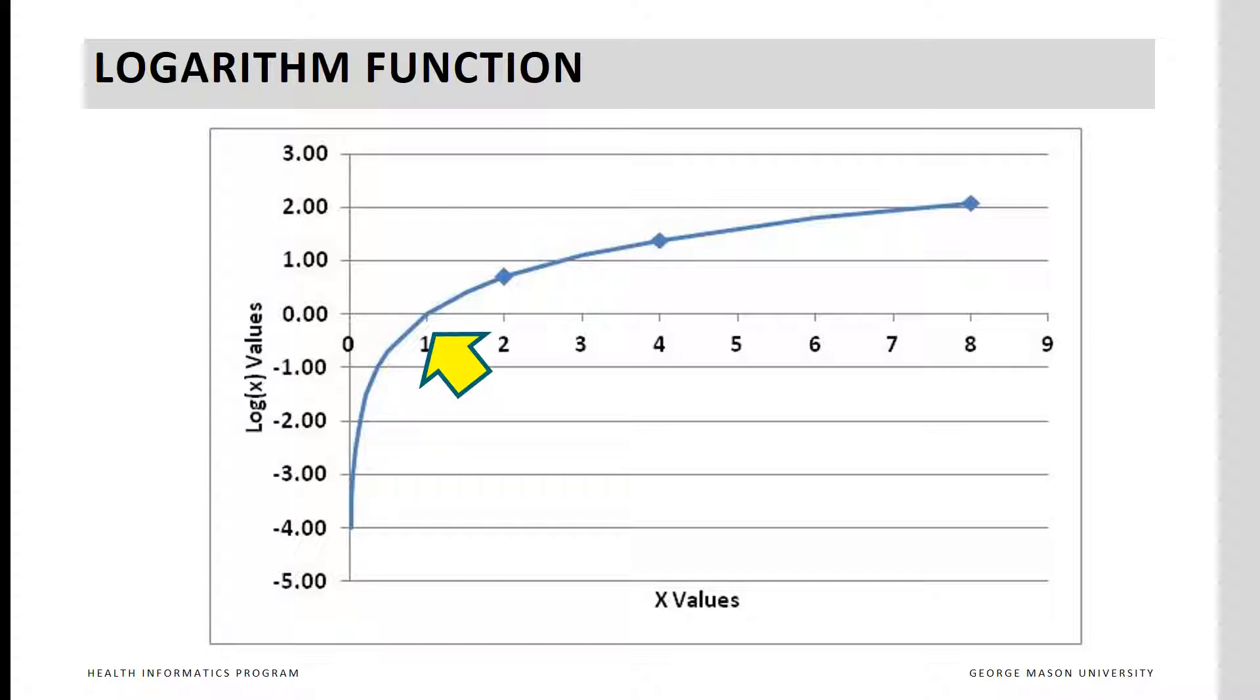That means that the logarithm of 1 is 0. It passes through the points with coordinates of 2 at 0.69, also the point with coordinates 4 and 1.39, and 8 and 2.08, because e to the power of 2.08 is 8, where e is the natural number of 2.718.